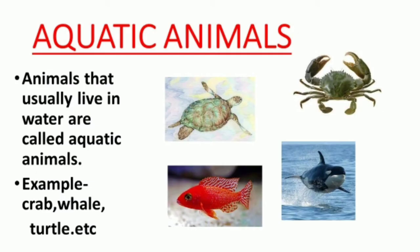Number 2: Aquatic animals. Animals that usually live in water are called aquatic animals. Yaani, wo animals jo paani mein rehte hain, unhe bolte hain aquatic animals. For example, fish, crab, whale, turtle, etc., are the examples of aquatic animals. Fish have fins, jis ke zariye wo paani mein swim karte hain. Aur turtles ke paas limbs hote hain jis ke zariye wo water mein swim karte hain.